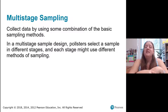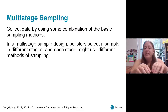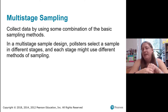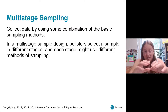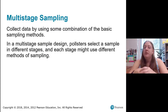One option available is multi-stage sampling, where you collect data using some combination of those basic sampling techniques. Pollsters select a sample at different stages, and at each stage they can use a different technique. Some of these sampling techniques are not necessarily great ways to gather data and some are great — it's context dependent. But really, simple random sampling is something we want to strive for whenever possible.